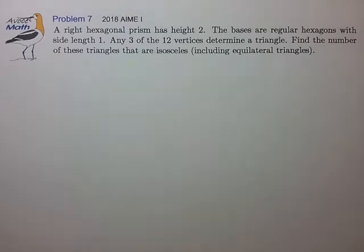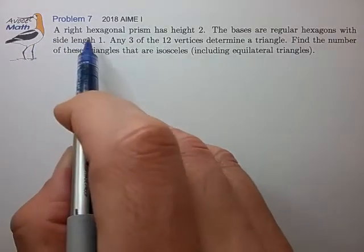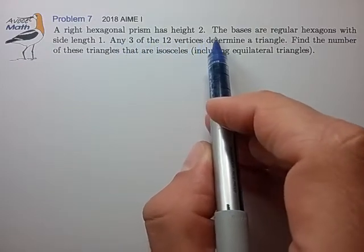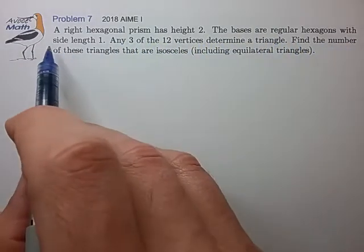Hi, this is problem 7 from the 2018 AIME-1. A right hexagonal prism has height 2. The bases are regular hexagons with side length 1.